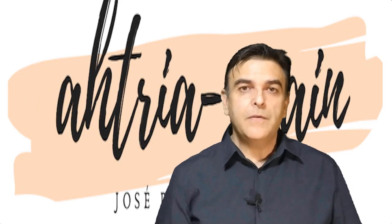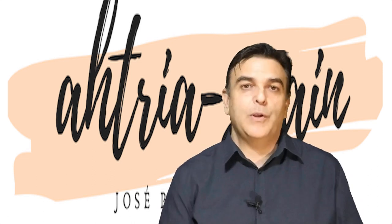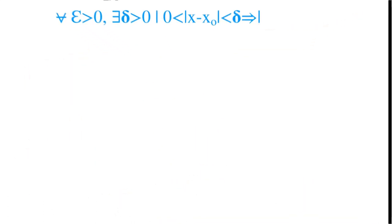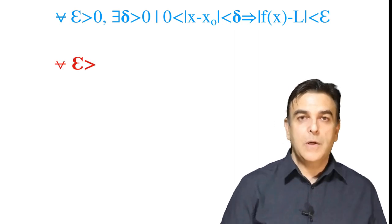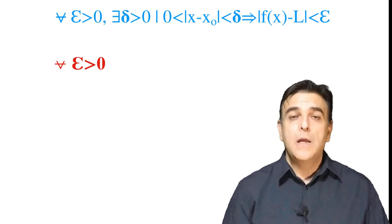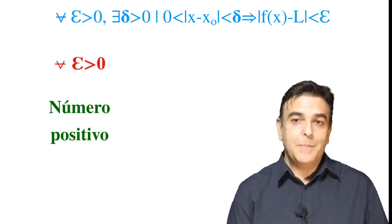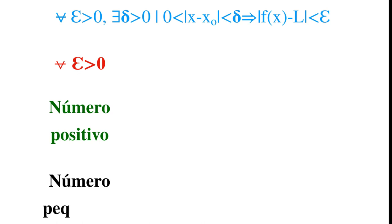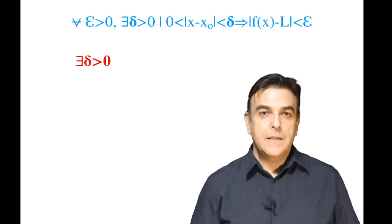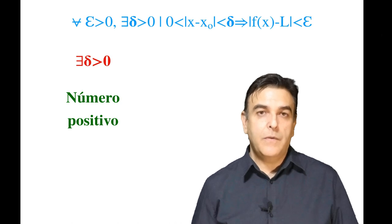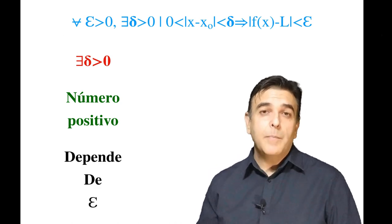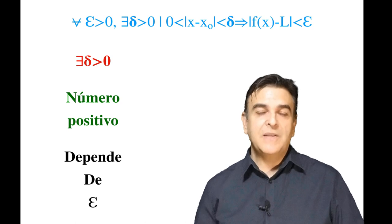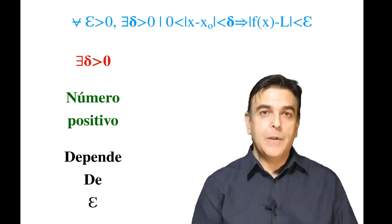Para entender esta definición la vamos a ir desglosando poco a poco. Primero, epsilon mayor que 0: epsilon es un número positivo y además muy pequeñito; cuanto más pequeñito, mejor. Existe un delta mayor que 0: al igual que epsilon, delta también va a ser un número positivo y pequeñito, y ambos van a depender uno del otro. Luego veremos el porqué.